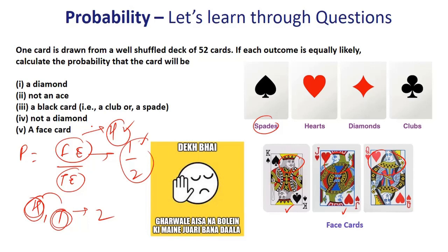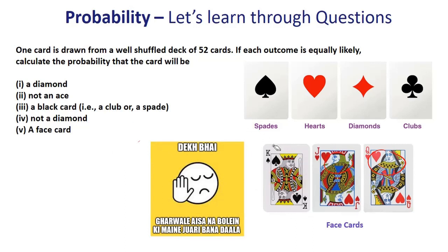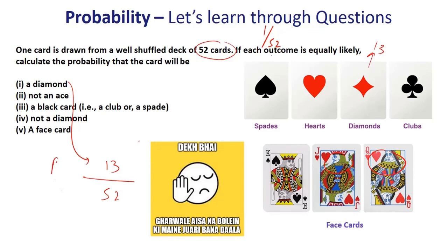Let us now test it. Probability, like P and C, is not something you can memorize — the clearer you understand through this video, the better off you'll be. One card is drawn from a well-shuffled pack of 52 cards; every outcome is equally likely, so drawing every card has a probability of 1/52. Calculate the probability that the card will be a diamond: there are 13 diamond cards, so the probability is 13/52, which is 1/4.